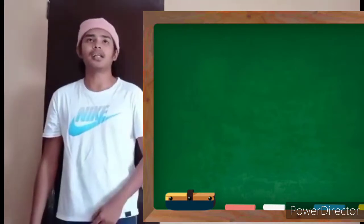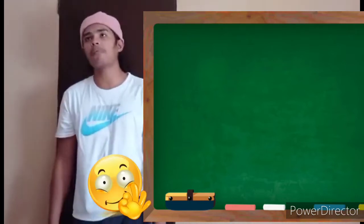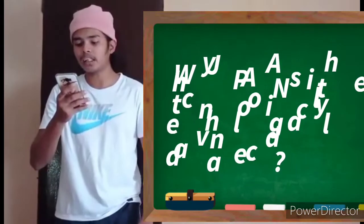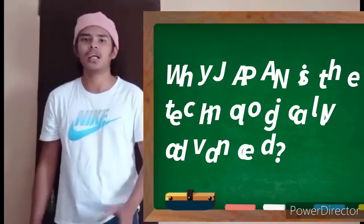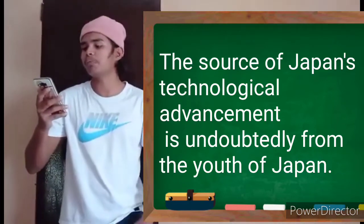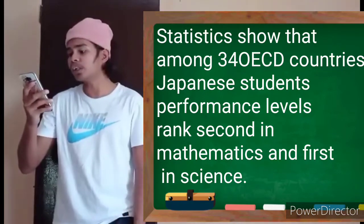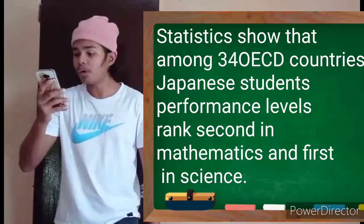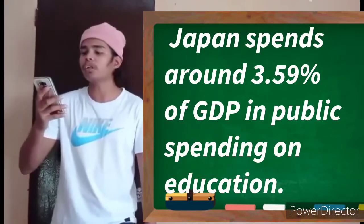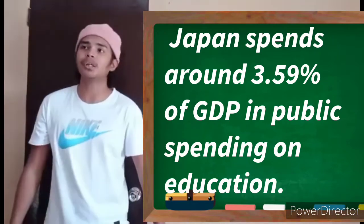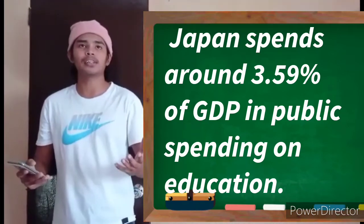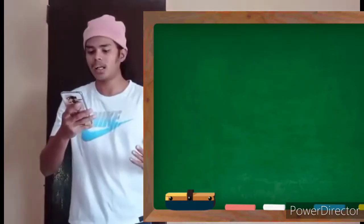So Japan is known for electronic products like appliances or electronics. Why is Japan technologically advanced? The source of Japan's technological advancements is undoubtedly from the youth of Japan. Statistics show that among 34 OECD countries, Japanese students' performance levels ranked 2nd in mathematics and 1st in science. Japan spends around 3.59% of GDP in public spending education. So in Japan, they spend money for students so their economy grows. Because of support to students, the economy in Japan is helped.